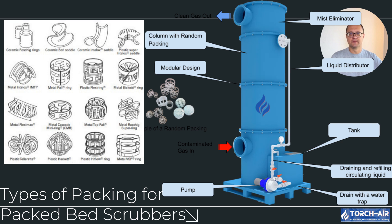Raschig rings: these are the OG of scrubber packing materials. Raschig rings are small, hollow cylinders that can be made from metal, plastic, or ceramic. They're great for low-pressure applications and are super durable in high temperature or corrosive environments. But while they provide decent surface area, there are more efficient options available today.